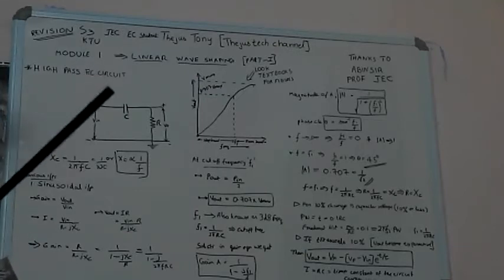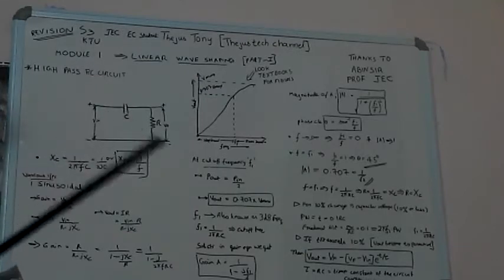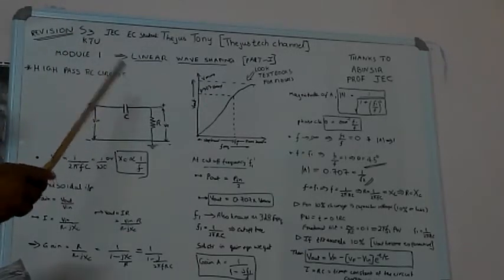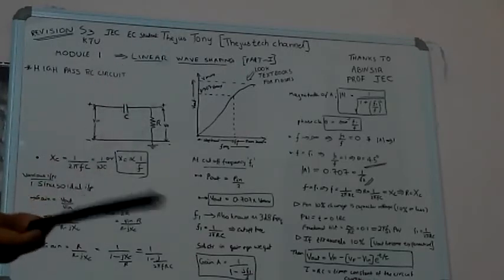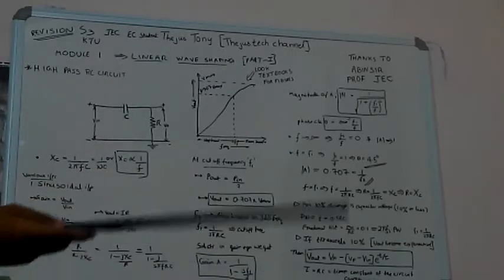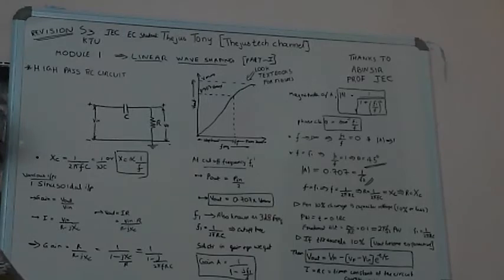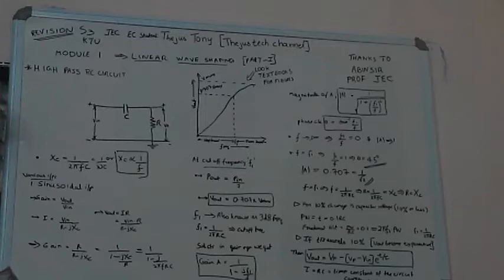Linear wave shaping involves passage of signals through a linear system like R and C, or R and L circuit or R and C circuit. The operations involved are linear, such as integration, differentiation, summation, filtering, and attenuation.